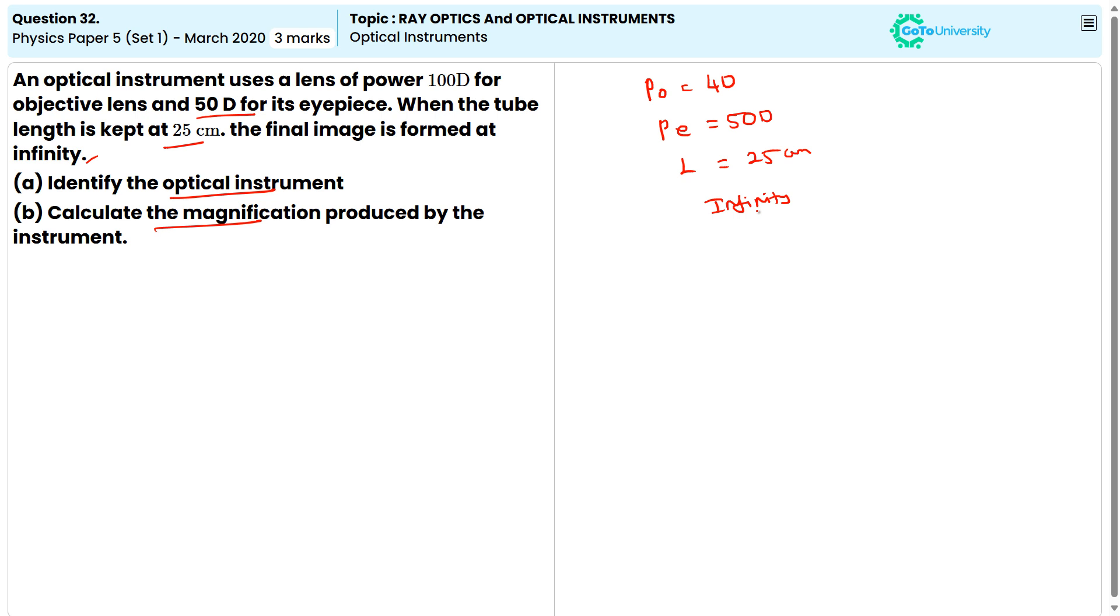So, based on this, we can say that the optical instrument described here is compound microscope. Because, a compound microscope typically uses an objective lens with low power and eyepiece lens with high power, that is 50D.